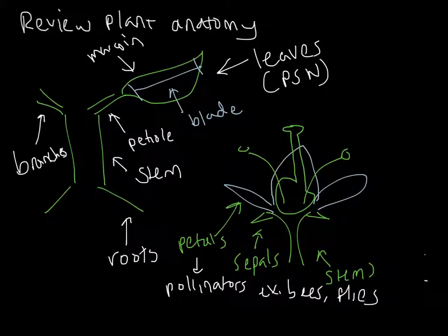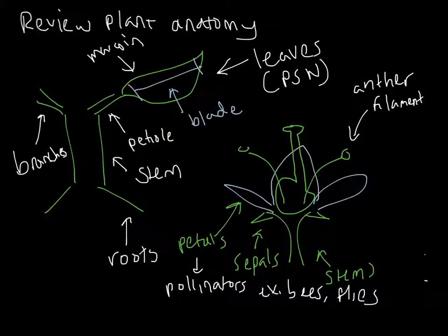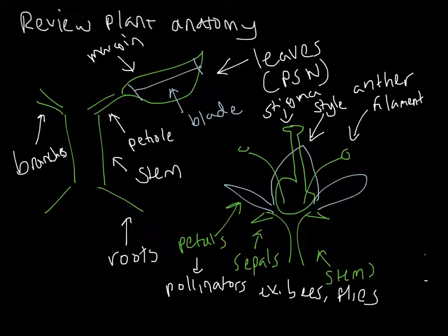In terms of male and female parts, we have the male part: the anther and the filament — the filament being the skinny part, the anther being the top part. We have the stigma and the style. A trick for remembering: the style is straight, like a female — females got the style, so it's small and skinny. We have the ovule at the base, which is key because that's where seed development and double fertilization happen.